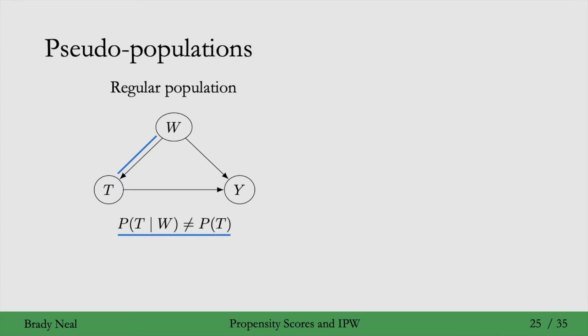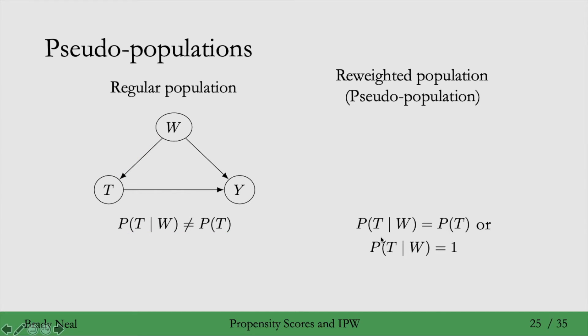What if we could re-weight this population so that we end up with that distribution equal to just this marginal, just P(T), or even just due to some constant? Importantly, it just doesn't have W behind the conditioning bar here.